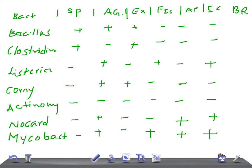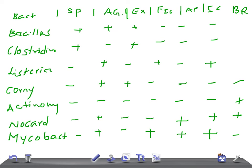Now let's talk about branching rods. Only two you should remember are branching rods: Actinomyces and Nocardia. All others are negative. So guys, I think this is really very helpful — a summary of gram-positive rods. Thank you so much for watching this video, take care.